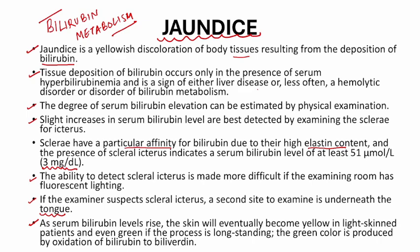As serum bilirubin levels rise, the skin will eventually become yellow in light-skinned patients, and even green if the process is long-standing. The green color is produced by oxidation of bilirubin to biliverdin. At around 3 milligrams per deciliter the sclerae become yellow first, and as bilirubin continues to rise, the skin also starts becoming yellowish.